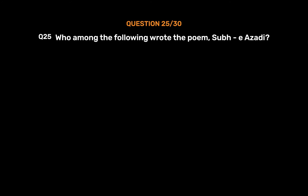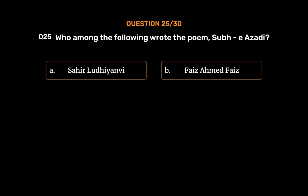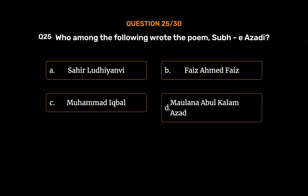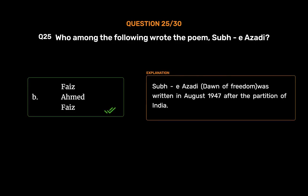Question No. 25. Who among the following wrote the poem 'Subh-e-Azadi'? Option A, Sahir Ludhianvi; Option B, Faiz Ahmad Faiz; Option C, Muhammad Iqbal; Option D, Maulana Abul Kalam Azad. The correct answer is Option B, Faiz Ahmad Faiz. 'Subh-e-Azadi' — Dawn of Freedom — was written in August 1947 after the partition of India.